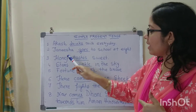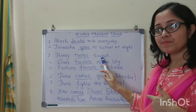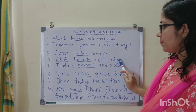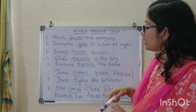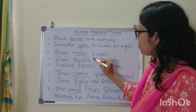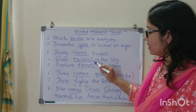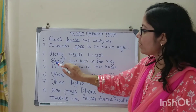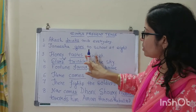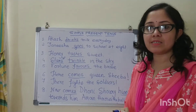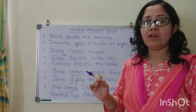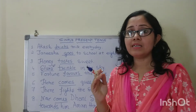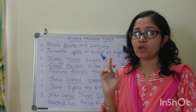Stars twinkle in the sky — twinkle. Now here I am not saying twinkles. Can you tell me why? Because here the subject is plural — stars. So whenever it is stars, here it will be twinkle, not twinkles. The boys play on the ground — so the boys plural: play, not plays.